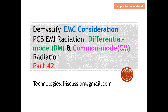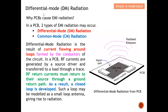As mentioned earlier, what actually causes a PCB to have EMI radiation? There are two types of EMI radiation in a PCB: differential mode radiation and common mode radiation. We can start by describing differential mode radiation. Differential mode radiation is the result of current flowing through the conductors of the circuit. Take a look at this diagram — this is a signal path, which provides a route for the signal.